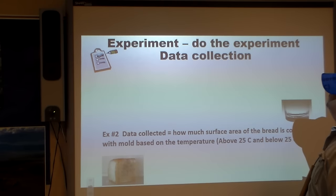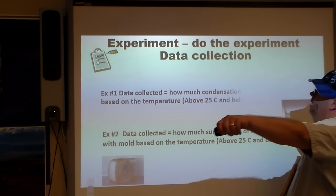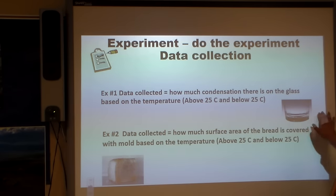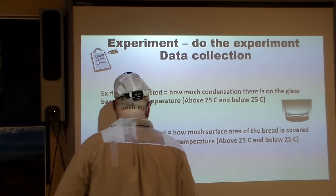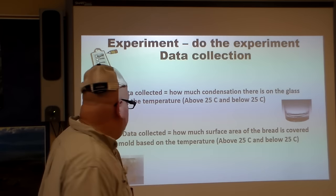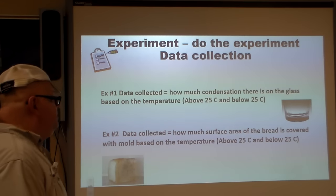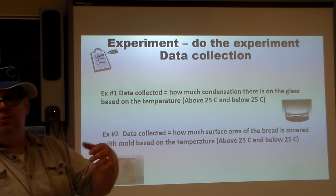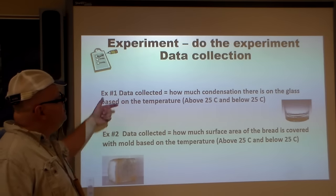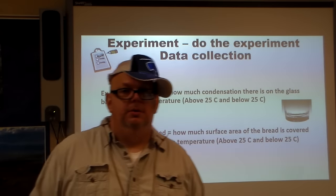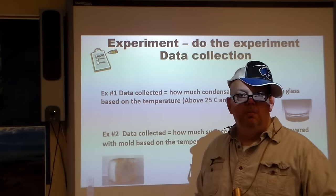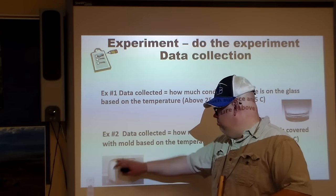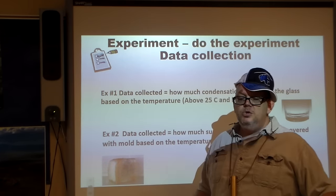Experiment. Do the experiment. Data collection. What kind of data are you collecting? For number one, for our condensation, is how much condensation is there on the glass based on the temperature? Number two, when we look at data collection, is how much surface area of the bread is covered with mold based on the temperature - above 25 and below 25 Celsius. So that's the kind of data that you would be looking at. Sometimes your data would be numbers, sometimes it would be the surface area that's covered, or maybe sometimes it might be something else. It depends what your experiment is about.